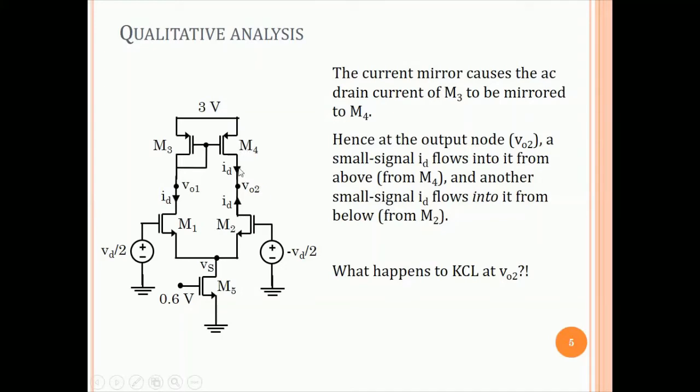Now, in this circuit, because this is ID, that ID, small ID flows through M3. And M3 mirrors the small ID to M4. And therefore, the current in M4 is a small ID flowing down. M2 has a small ID flowing up. And so, at VO2, we have one ID coming down and one ID coming up. In the current source load, there was only a small ID coming up in M2. Now, the first question we ask is, what happens to KCL at this node? We have an ID coming up, ID coming down, what happens to KCL? Something to think about, isn't it?